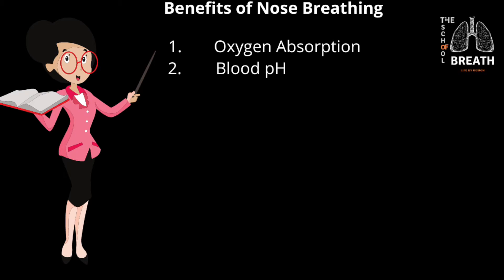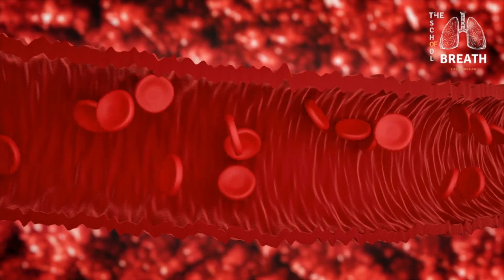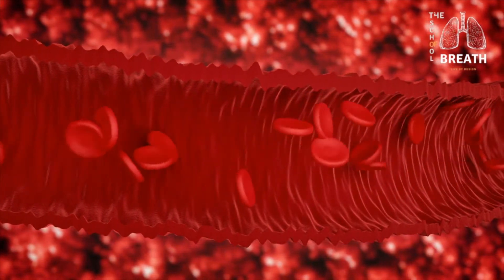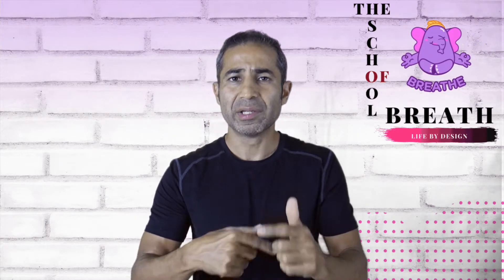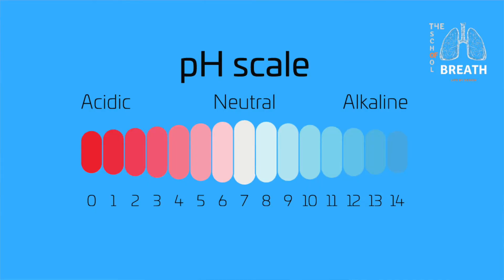Second: the pH value of your blood. When speaking of breathing, we only think about oxygen. But research has shown that carbon dioxide has an equally important role to play in the respiratory system, especially with the absorption of oxygen in the bloodstream. When the balance is maintained between oxygen and carbon dioxide in your blood, it automatically creates an ideal blood pH value of 7.35.